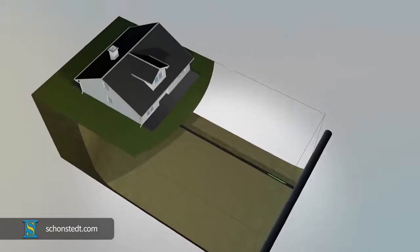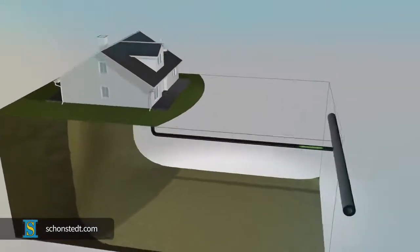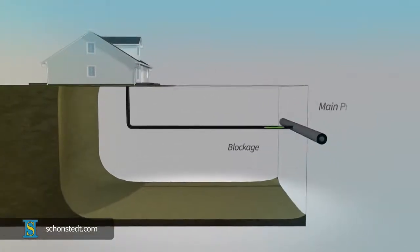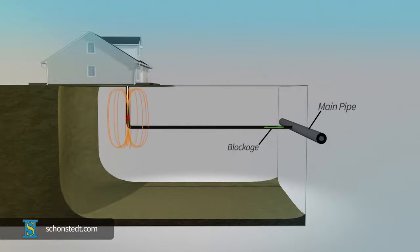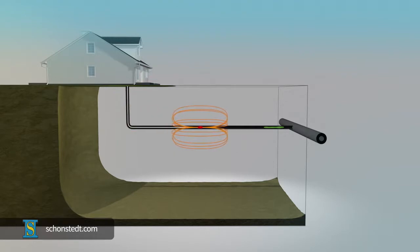Sondes are typically used to locate a blockage in a PVC pipe going from a house or building to a street or main pipe a short distance away. It is necessary to have a general idea of where the sonde might be and in what direction it is being pushed, otherwise locating it can be extremely difficult.